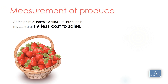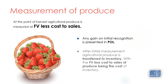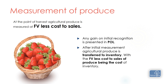Now let's look at how to measure agricultural produce. At the point of harvest, agricultural produce is measured at fair value less cost to sell, and any gain or loss on initial recognition is presented in profit or loss, just like biological assets. After initial measurement, the agricultural produce is transferred to inventory and IAS 2 principles are applied. The fair value less cost to sell of the agricultural produce is treated as the deemed cost of that inventory.